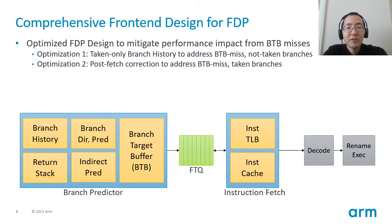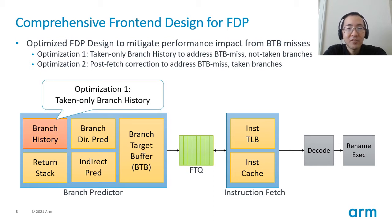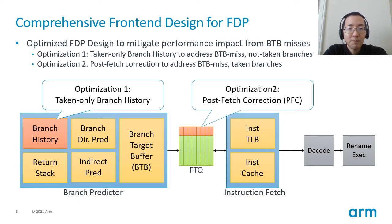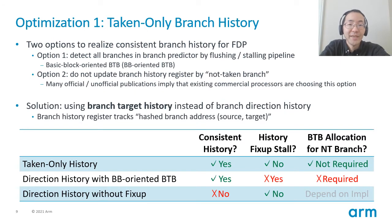For setting a new baseline microarchitecture for FDP, we propose a comprehensive front-end design for FDP. This front-end microarchitecture contains two key optimizations to mitigate performance issues due to BTB misses. The first optimization is taken-only branch history instead of branch direction history to address BTB-miss not-taken branches. The second optimization is post-fetch collection to address BTB-miss taken branches.